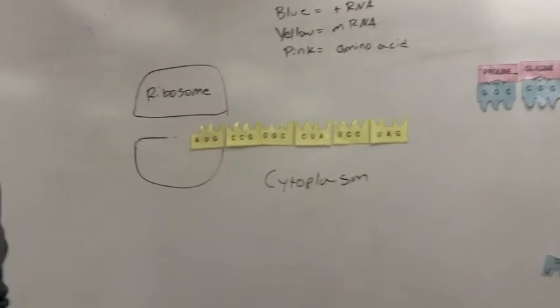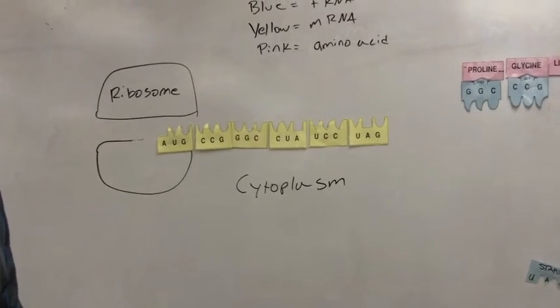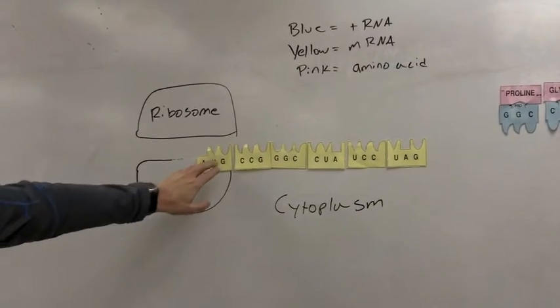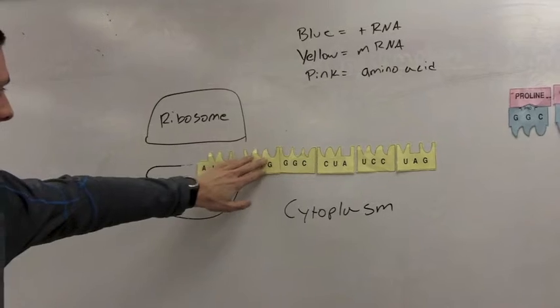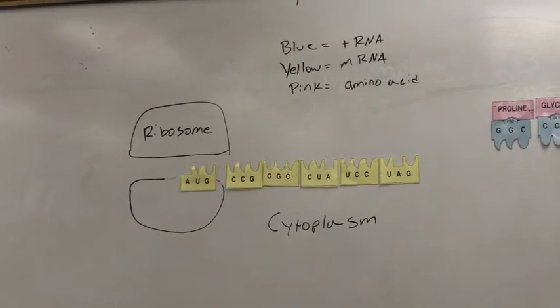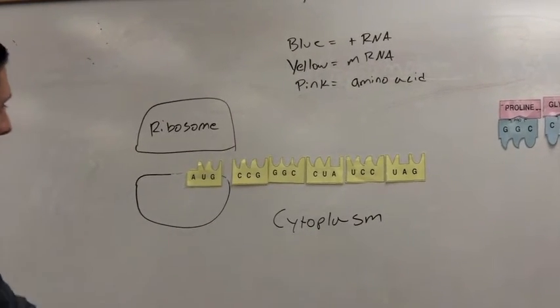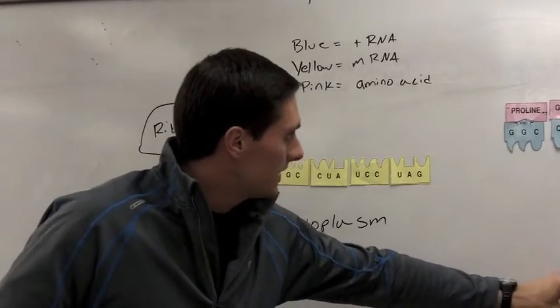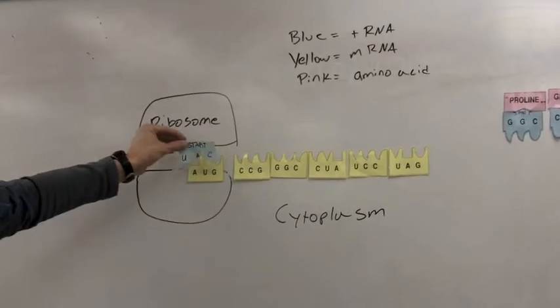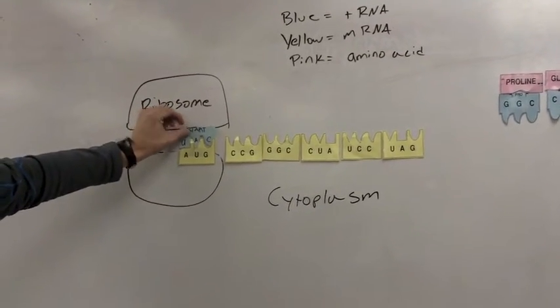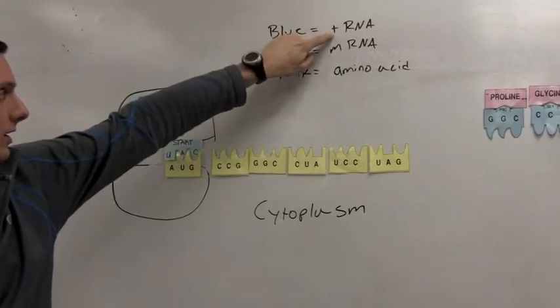And so these three nucleotides together represent a codon on a messenger RNA. And so our first messenger RNA gets to the ribosome, and matched to that is a blue little puzzle piece here, and that represents the transfer RNA.